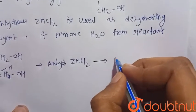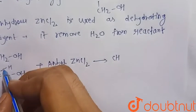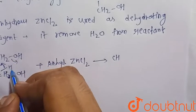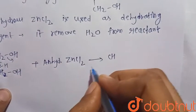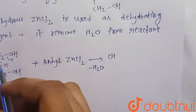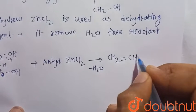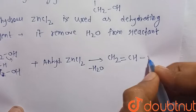So there is the formation of, that is this will go here and this will go here. So this H and OH combined, so that is the removal of water molecule and a double bond is formed, so that is the formation of CH2=CHOH.